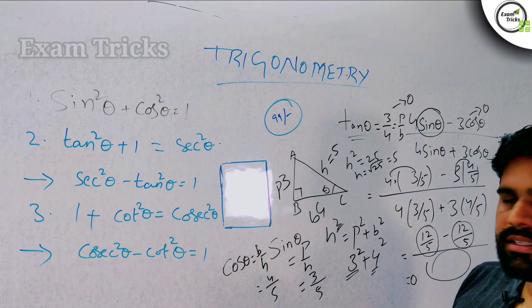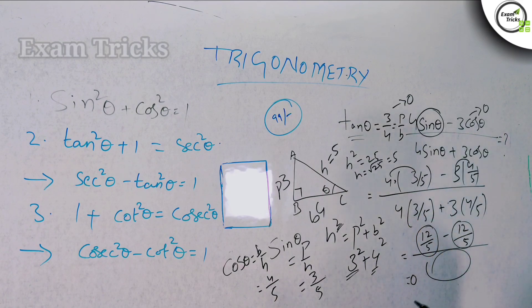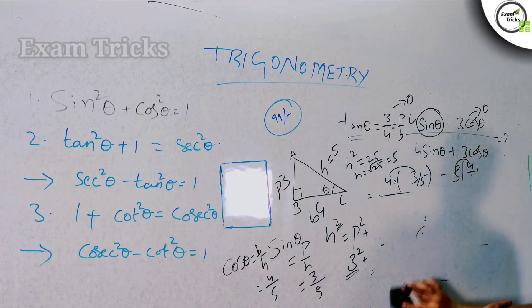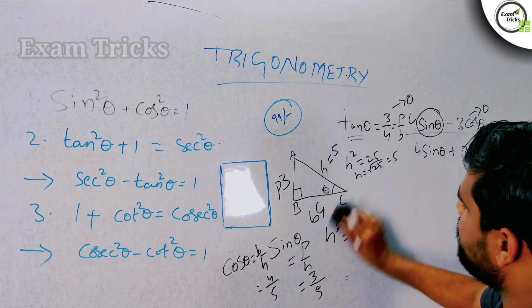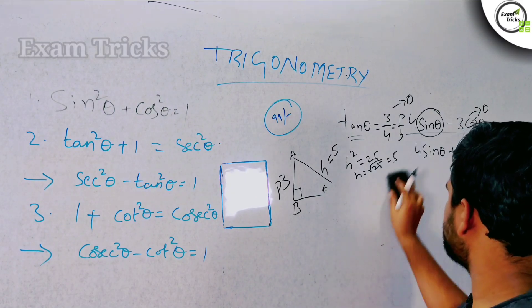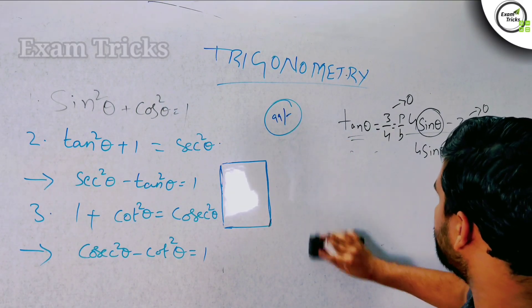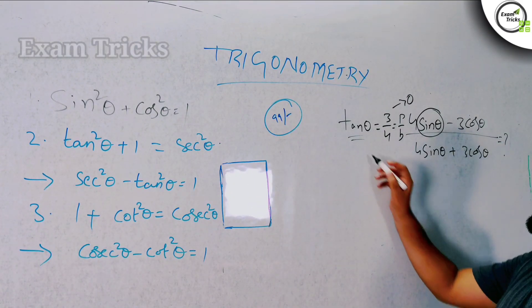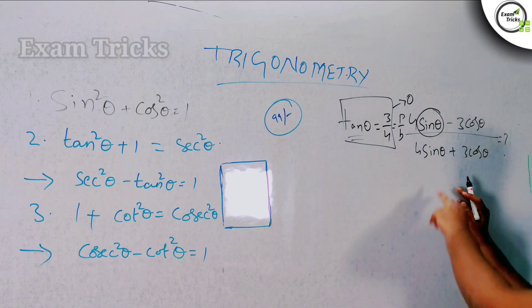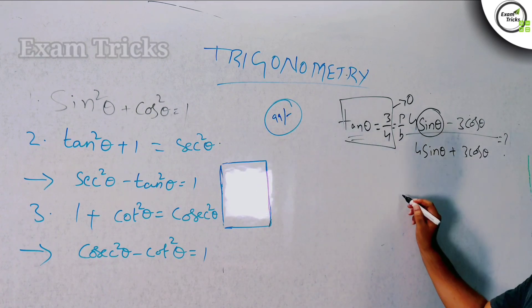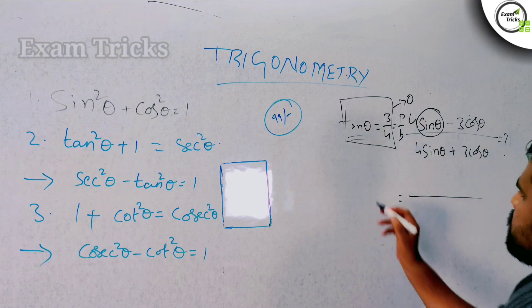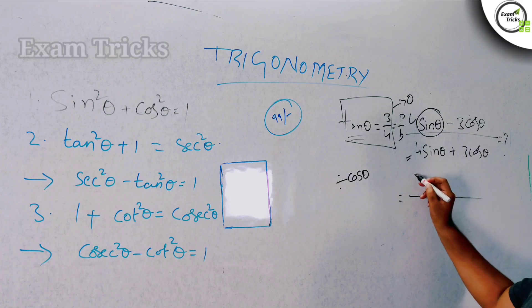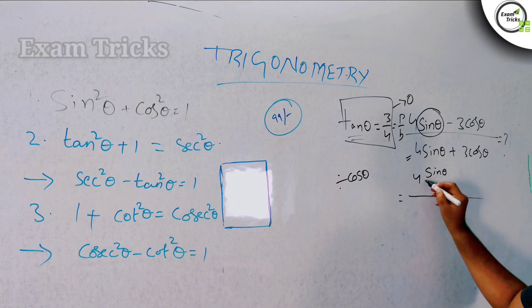But now there is a faster method. When you have a trigonometry problem like this, there are various methods. Let's do it as a fast method. In the question, sin and cos appear, but it is only tan that is given. It is easy to solve by converting. So let's divide the entire equation by cosθ. Then sin by cosθ gives tanθ.